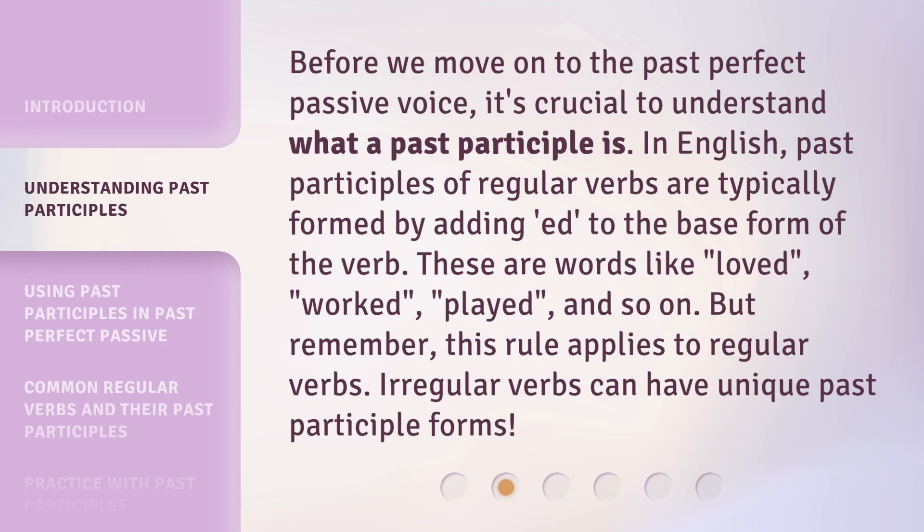Before we move on to the past perfect passive voice, it's crucial to understand what a past participle is. In English, past participles of regular verbs are typically formed by adding "-ed" to the base form of the verb. These are words like "loved", "worked", "played", and so on. But remember, this rule applies to regular verbs. Irregular verbs can have unique past participle forms.